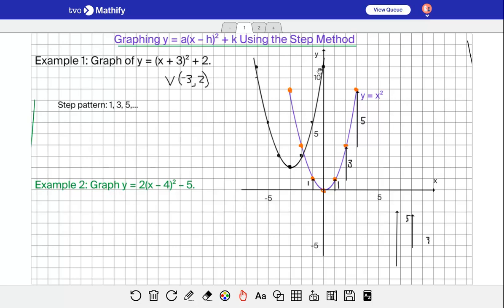Next one here, we're graphing y equals 2(x - 4)² - 5. In this case the vertex would be at (4, -5), so we'll go over to 4 and then down 5. Now in this case the a value is 2, so that's a vertical stretch of factor 2. The steps are twice as big because the a value is 2, so instead of 1, 3, and 5, I multiply all those by 2, so my steps will be 2, 6, and 10.